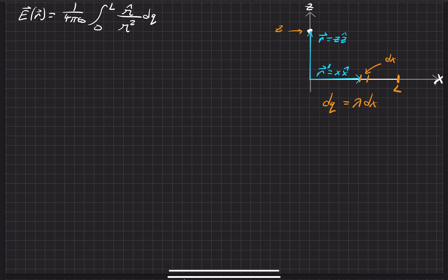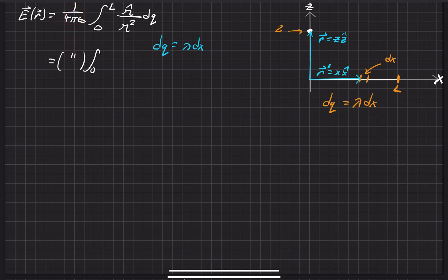Just to keep things organized, I'll highlight the steps. We go ahead and make the substitution for dq, exchanging it for lambda dx. The integral stays the same, and the ratio also stays the same — now we just have our lambda dx. Since lambda is actually constant, we can bring it out in the next step.